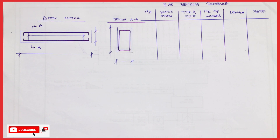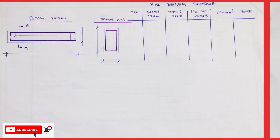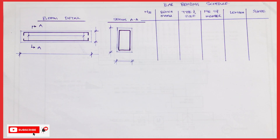So what is a bar bending schedule? A bar bending schedule is just a table showing you the amount of reinforcements used in each of the structural elements in an overall construction — just for you to know the amount of reinforcements you're using in a beam, a column, a foundation pad, a slab.